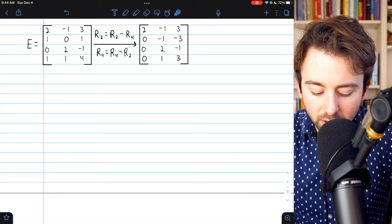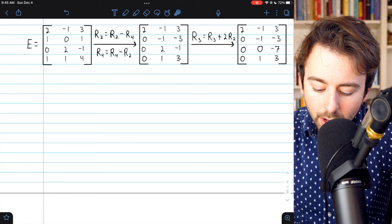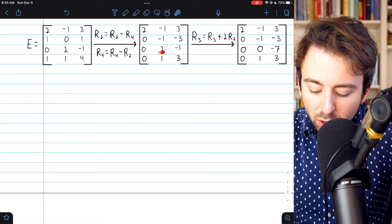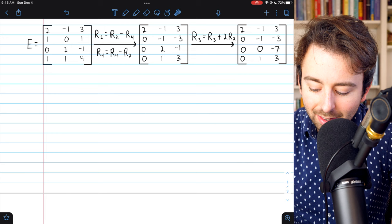We have zeros below the two like we want. Now, we want to get zeros below the next leading entry of negative one. To make this two equal to zero, we'll add two copies of row two into this third row, and that gets us here.